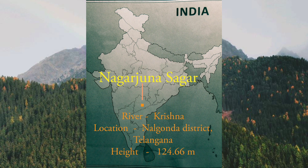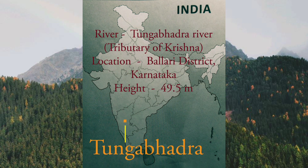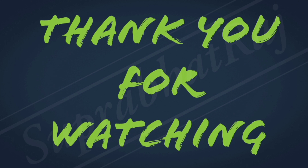Nagarjuna Sagar's total height is 124.66 meters. Next is Tungabhadra Dam, also known as Pampa Sagar. It is located on the Tungabhadra River, a tributary of the Krishna River, in Ballari district, Karnataka. Its height is 49.5 meters.